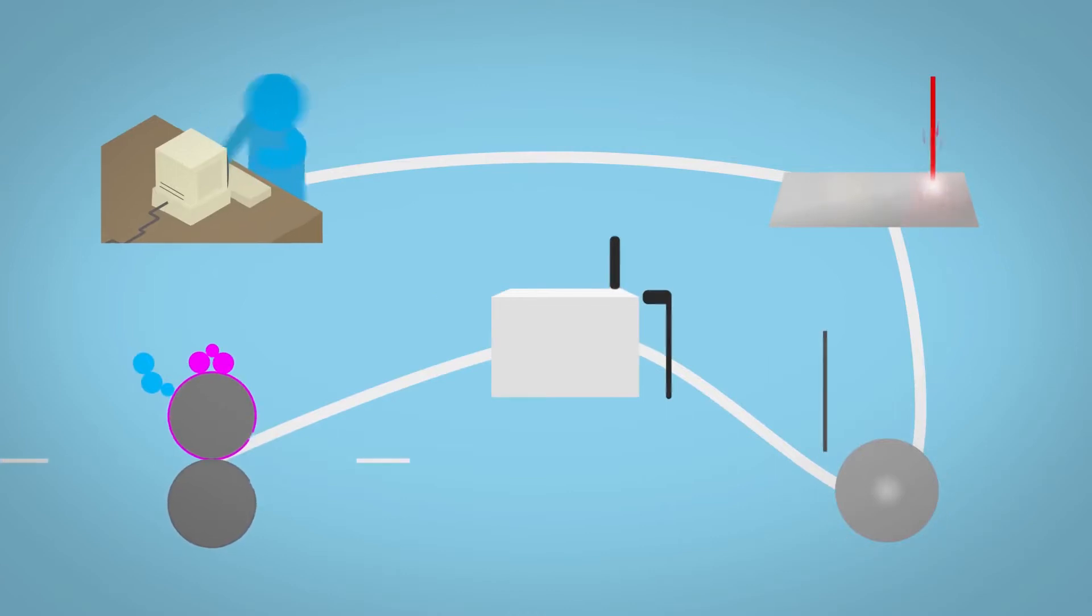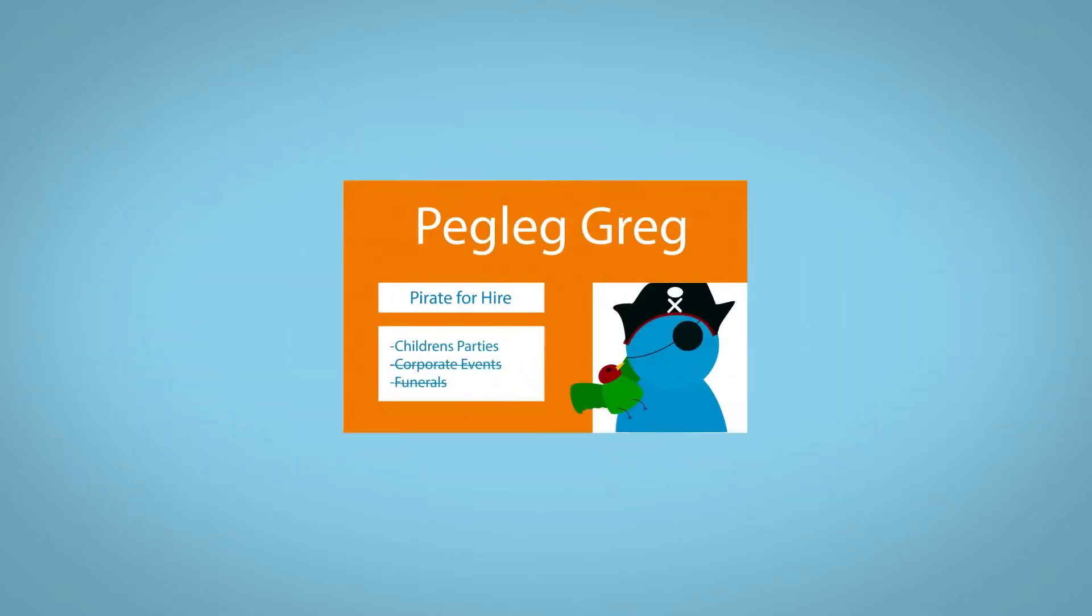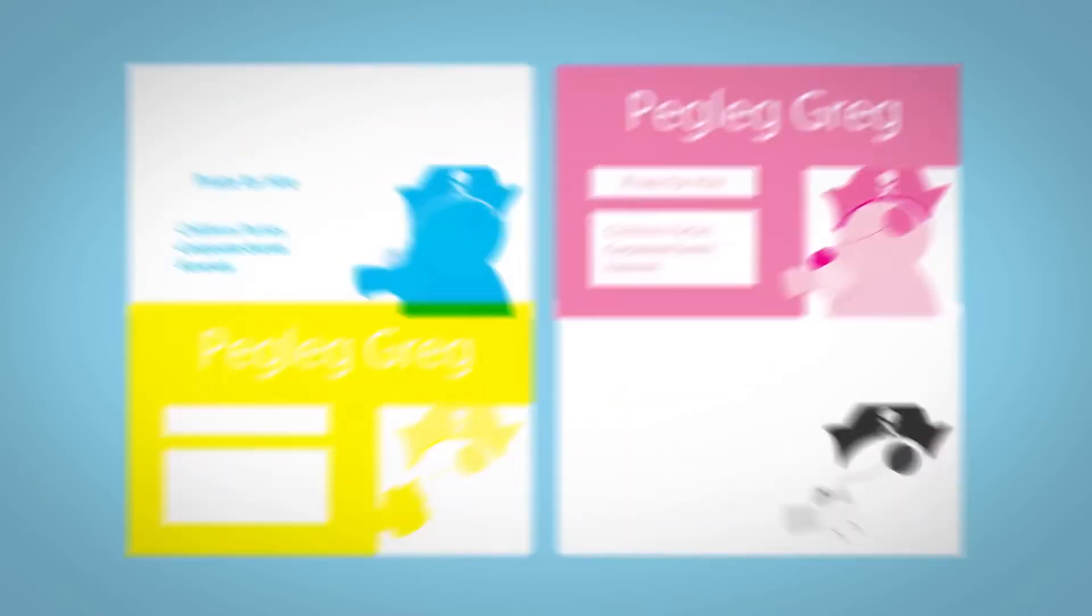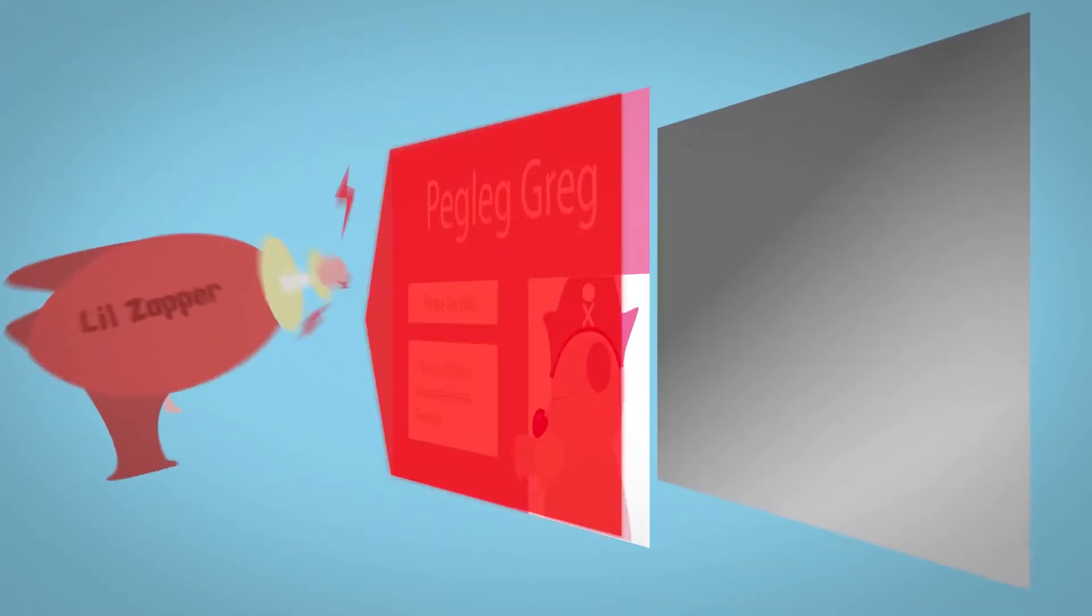Offset printing begins with the pre-press stage, where digital files are broken down by their colour separation, and are laser etched onto coated aluminium plates.